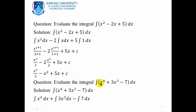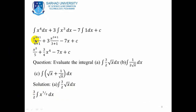Now, to evaluate the integral of x⁴+3x³−7 with respect to x. Apply integration to each term: integration of x⁴, integration of 3x³, and integration of 7. Using the definition — add 1 to the power divided by power plus 1 — we obtain x⁵/5 + (3/4)x⁴ − 7x + C.